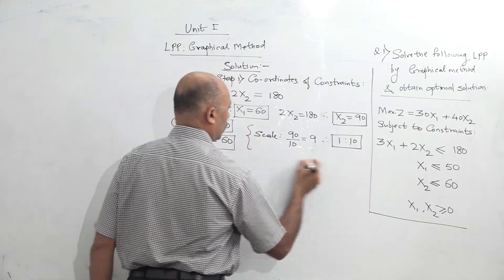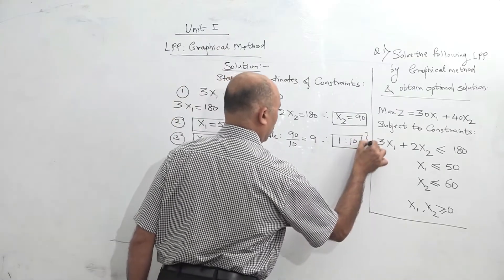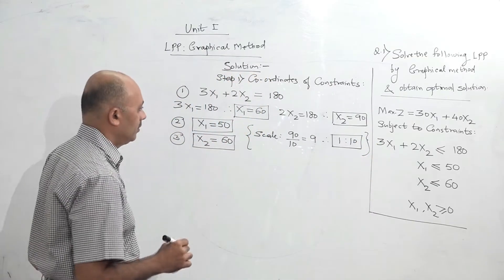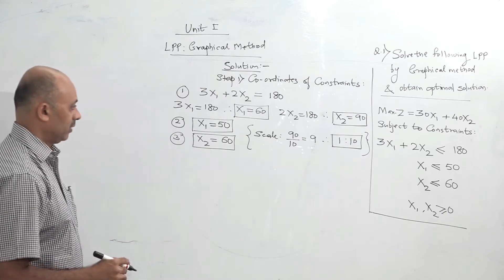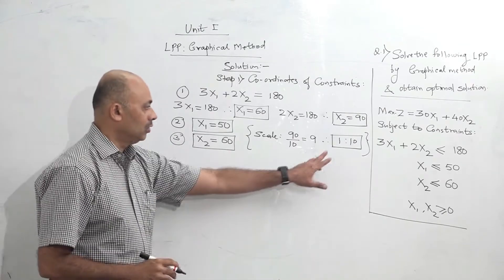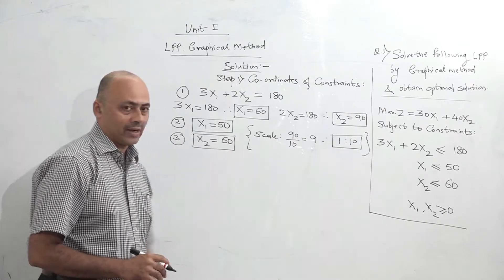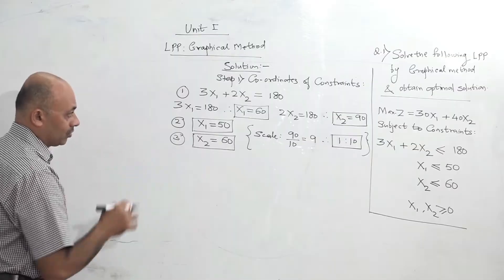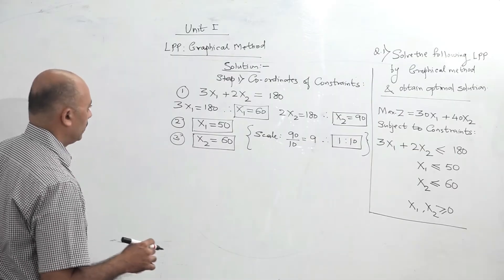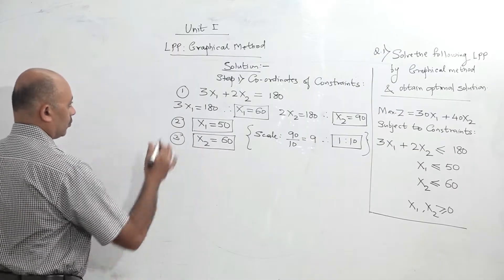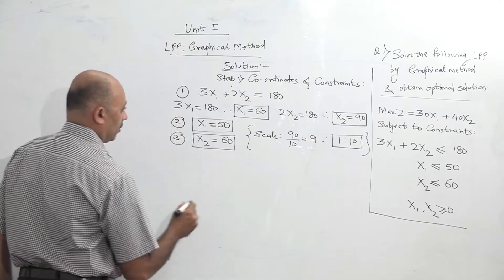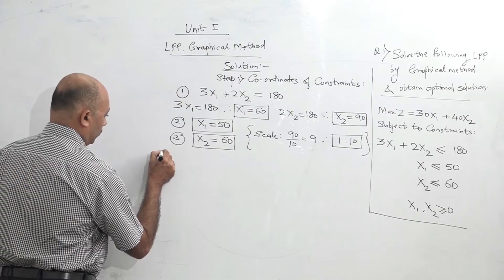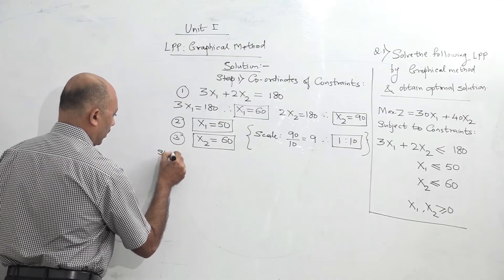This is a thumb rule for finding the scale, not an exact rule, but this will work. So it means now we know the scale of the graph and we are going to plot the graph to the scale of 1 is to 10. So this was step 1 — finding coordinates. Now step 2, we will draw the graph.